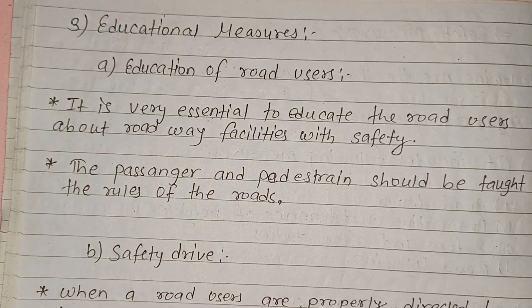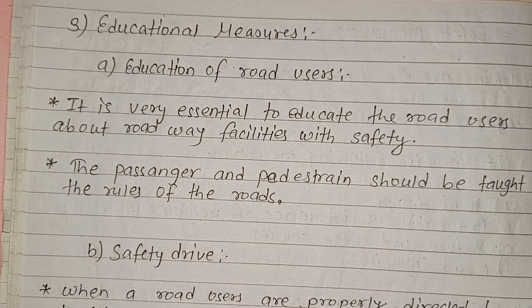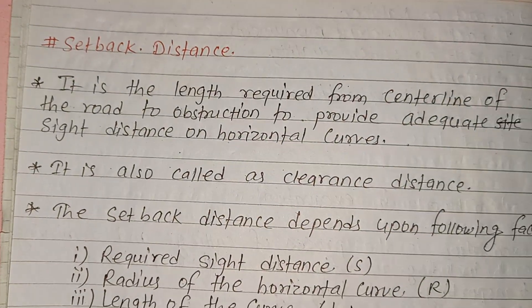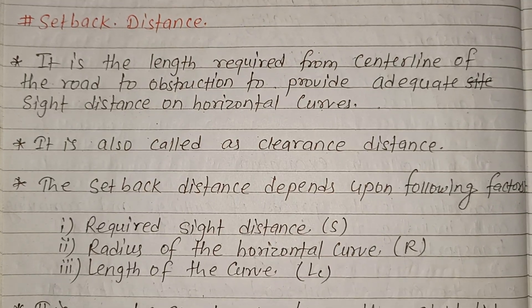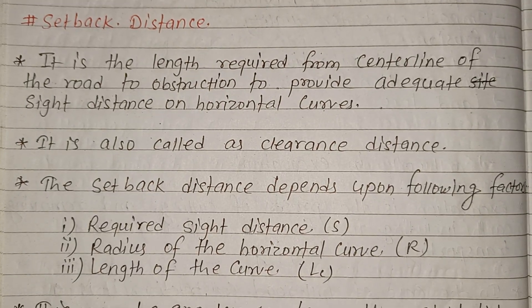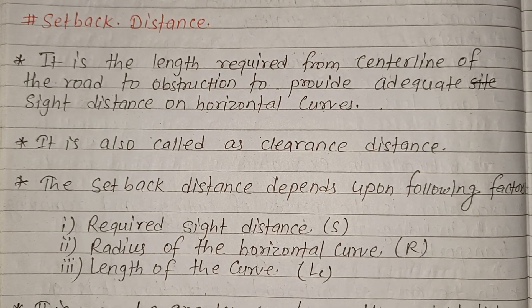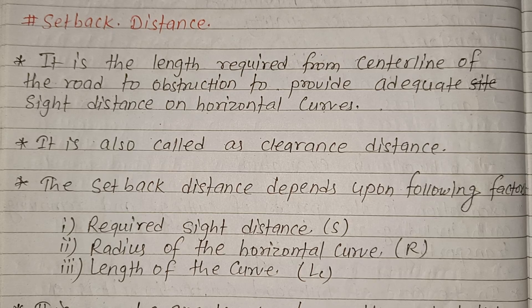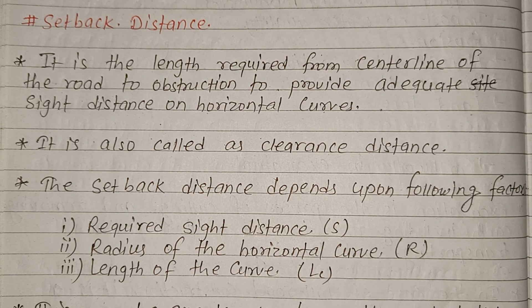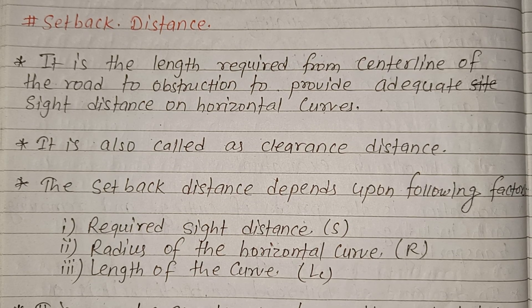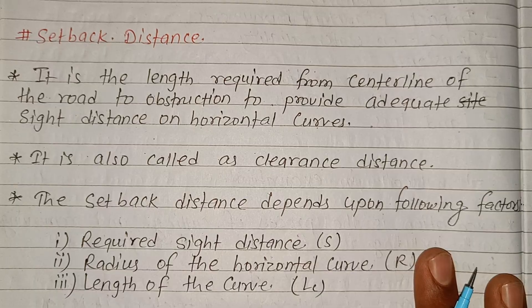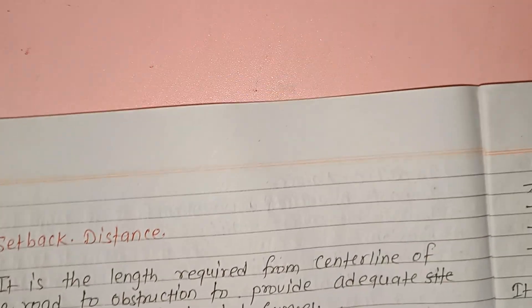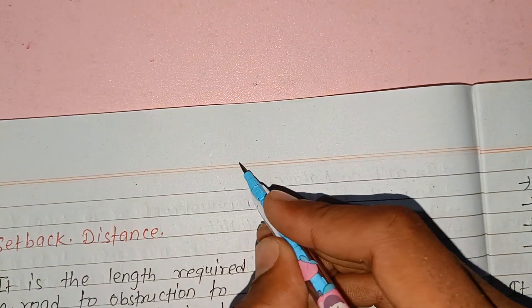Setback distance is also a short note topic. It is the length required from the center line of the road to an obstruction, to provide adequate sight distance on a horizontal curve.